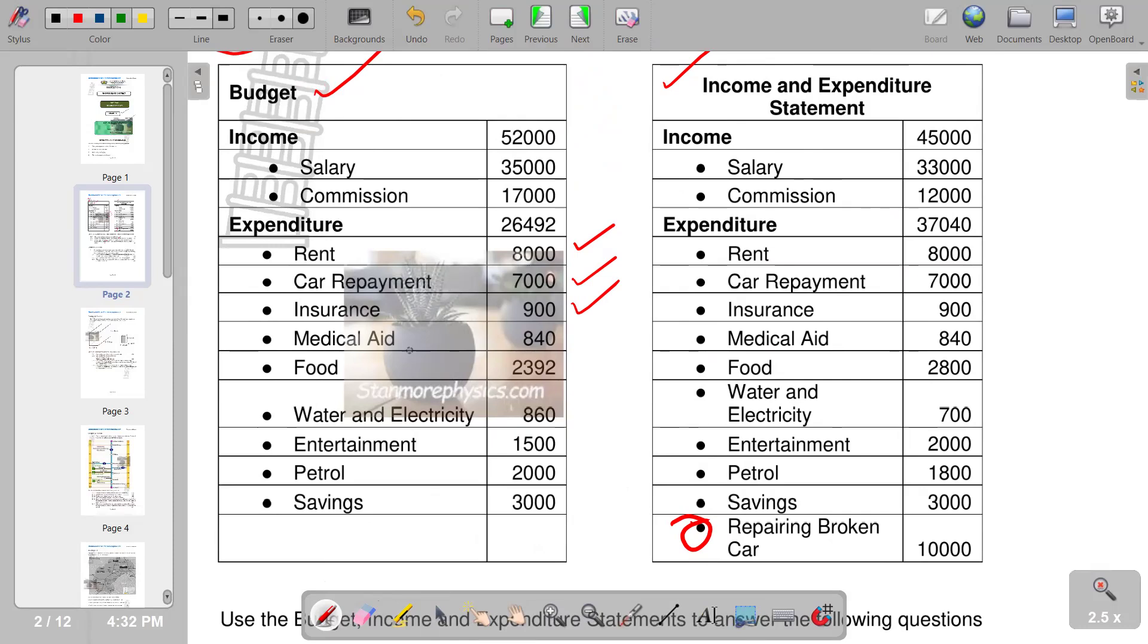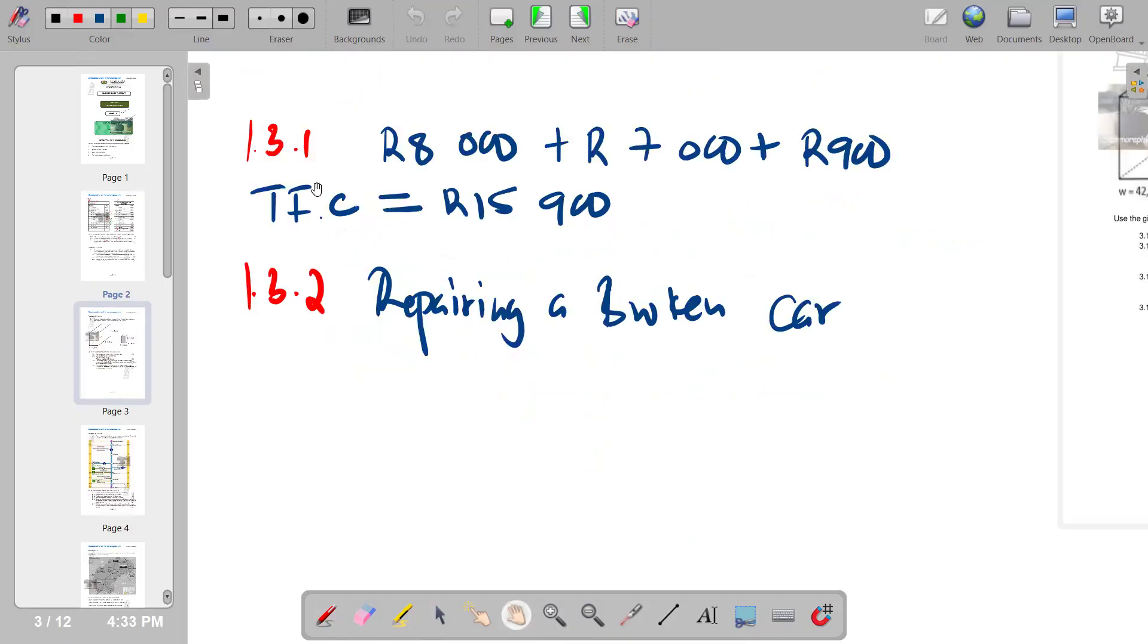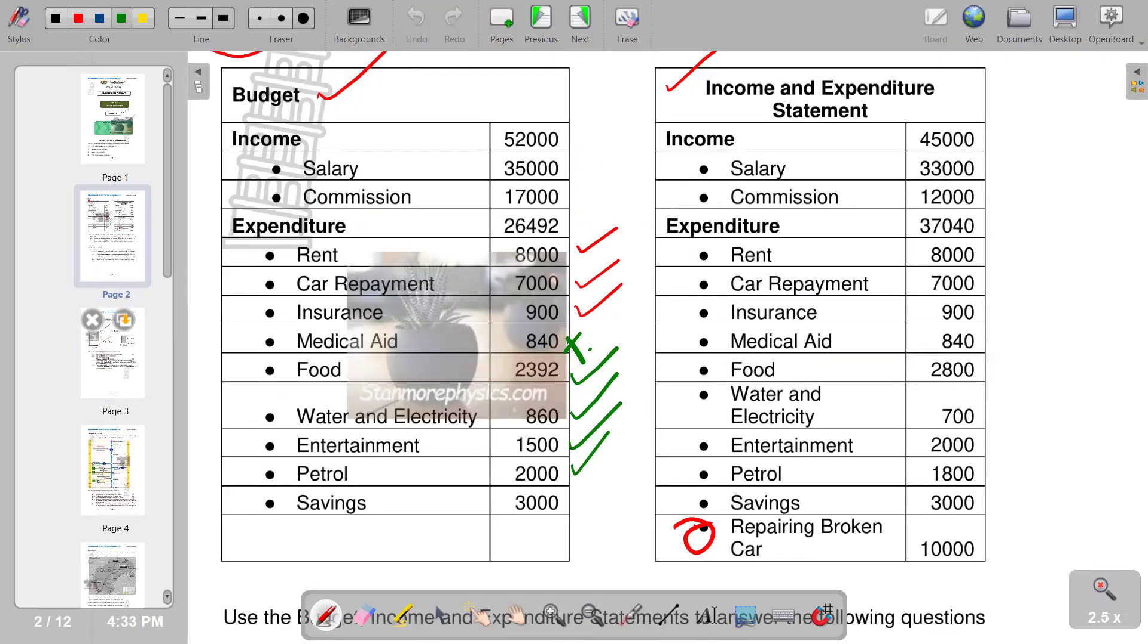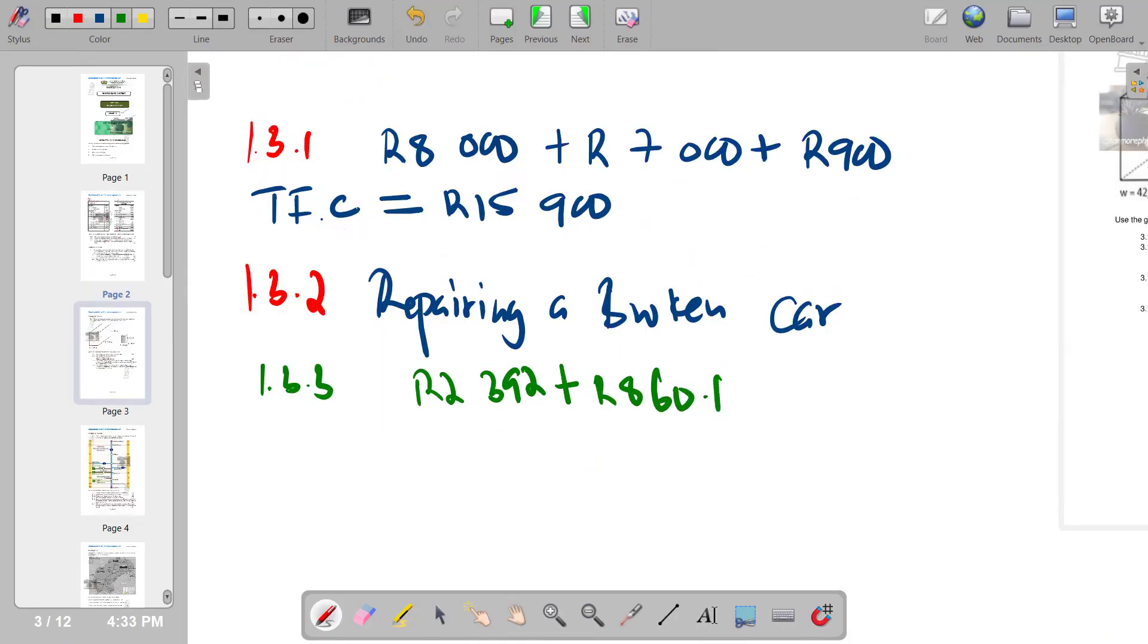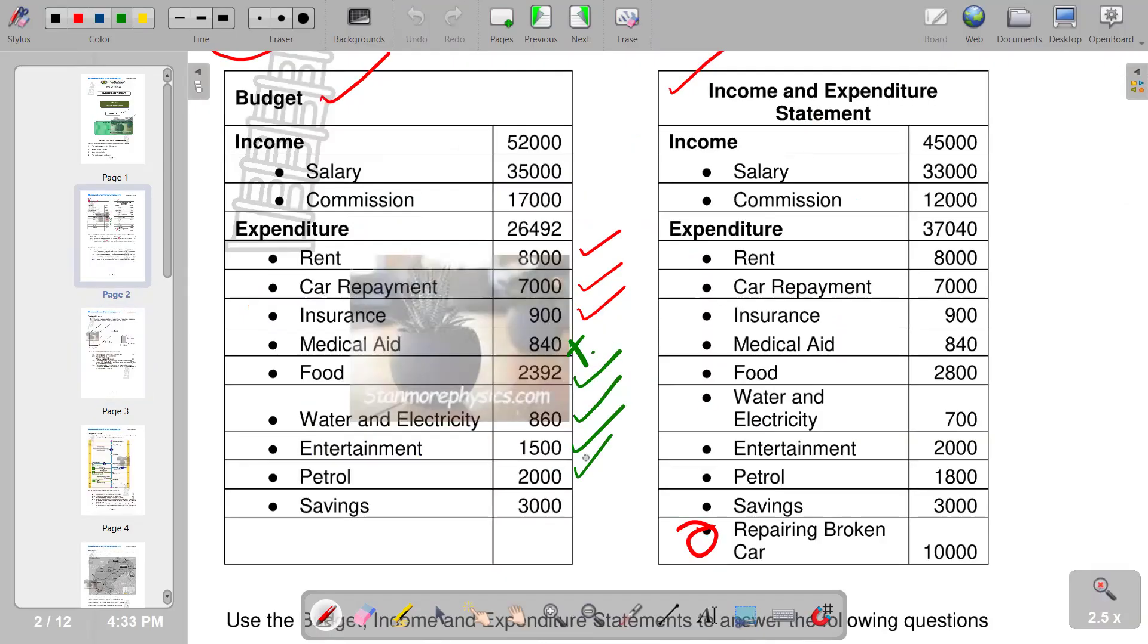We go to the budget section. We are not going to take note of medical aid, so we are only going to take into account food which is 2392, water and electricity, entertainment, and petrol. Savings is not going to be part of our variable cost. We add 2392, plus 860 for water and electricity, plus 1500, plus 2000.